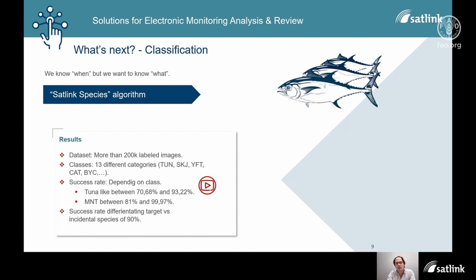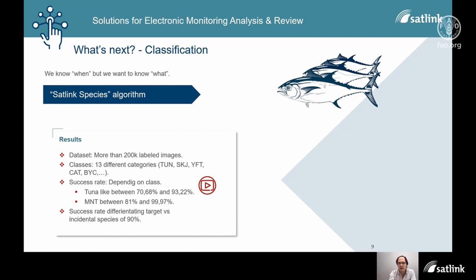We have a big dataset of more than 200,000 labeled images, specifically labeled by species. We have 13 different classes to classify the detected fish — for example, tuna, skipjack, yellowfin. We have a specific tuna category for when it is not clear whether it is skipjack, yellowfin, bigeye, or others. We also have categories for bycatch events when they are not target species. Our success rate depends on each class: tuna-like fishes achieve between 70 and 93%, with rays between 81% and even 99.9% classification on the previous algorithm run.